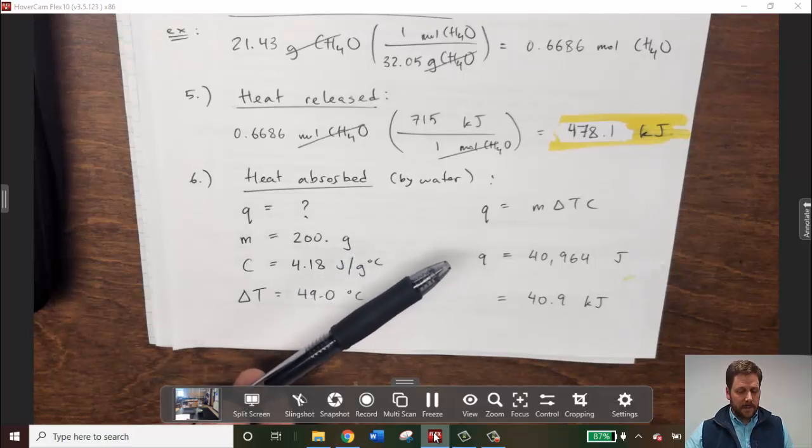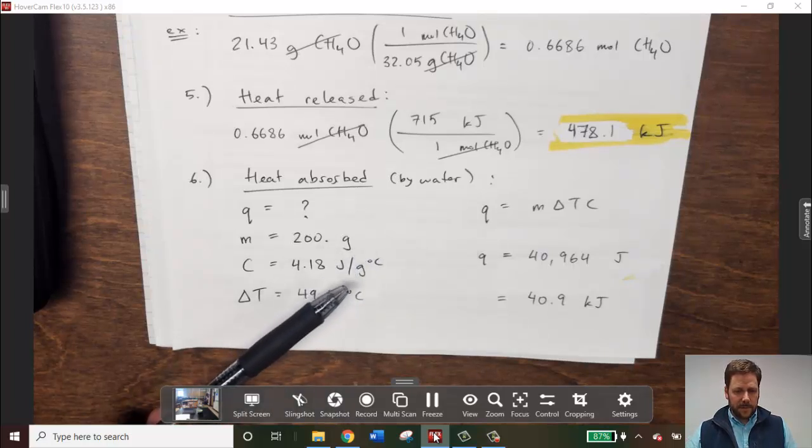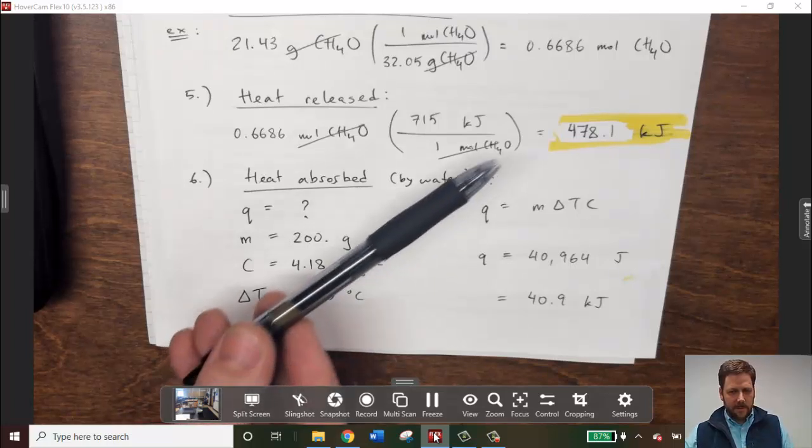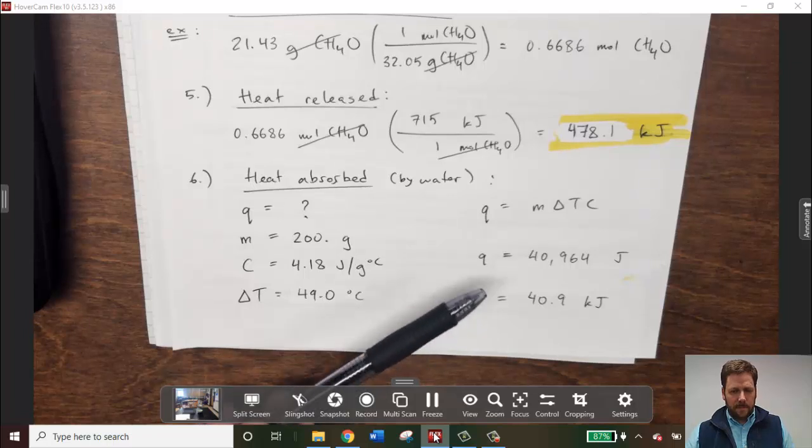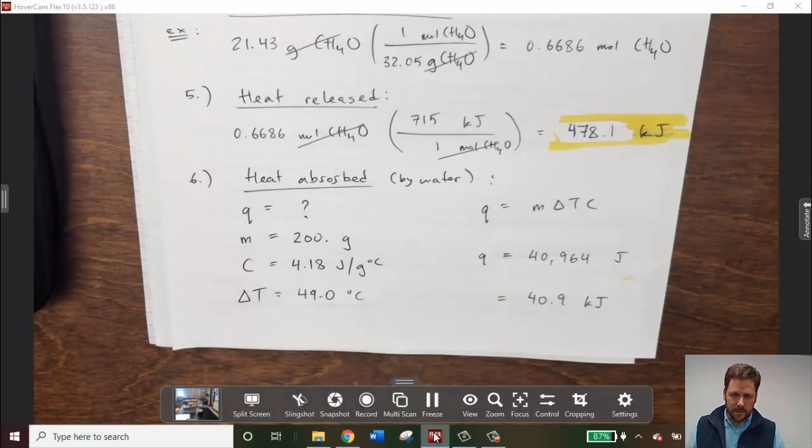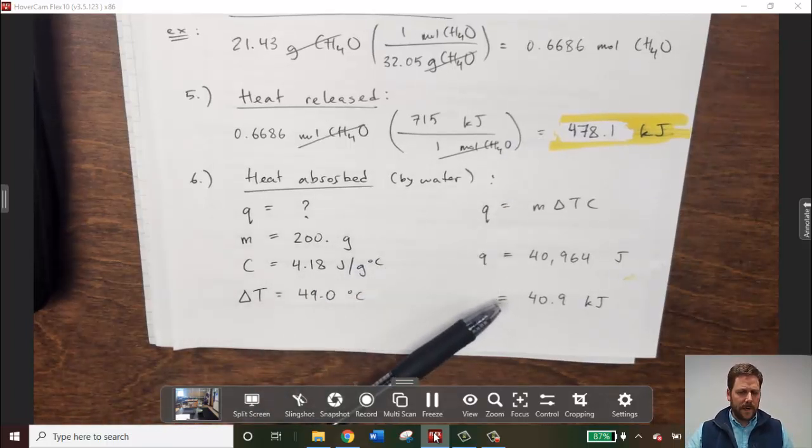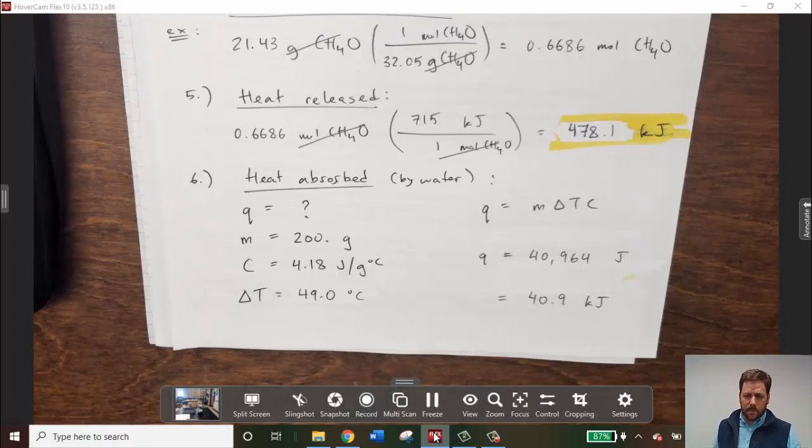With that temperature change and these other values plugged into this equation, we can calculate how much energy was absorbed by the water. Notice when I do that calculation, my answer is in joules because grams and degrees Celsius cancel. However, I want to compare it to this number in kilojoules. So we're going to do a joule-kilojoule conversion by dividing 40,964 joules by 1,000 to get 40.9 kilojoules. You'll notice that out of the 400 or so kilojoules that were released, only about 40 were actually absorbed by the water. Most of the heat was actually absorbed by the air, the metal ring, and the beaker itself. So probably somewhere between 5 and 10 percent of the heat which is released is actually absorbed. And that's how we're going to calculate percent efficiency.